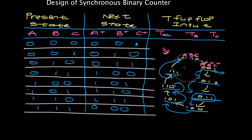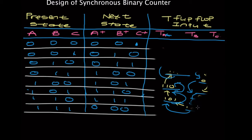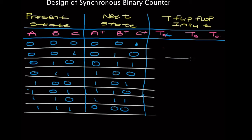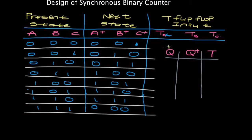Before we fill in the T flip-flop input, there are some things we need to know. Let's start by drawing a table for the T flip-flop. Anytime you see Q and Q+, or A and A+, or C and C+, you should know that those represent the present state and the next state. So Q is the present state and Q+ is the next state — those are the notations used in binary counters. And T signifies the T flip-flop.